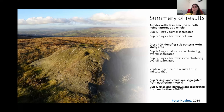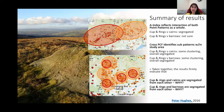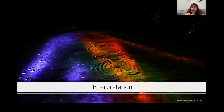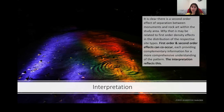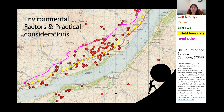Summarising and interpreting now: it is very important to note that the A index reflects the interaction of both point patterns as a whole. So they indicate cup and rings and cairns are segregated, and that cup and rings and barrows might be segregated. The local cross-PCF is used to identify sub-patterns within the study area — it did identify some clustering at less than a kilometre, which could be further investigated by a surface survey, but overall the patterns were also segregated. Essentially it is clear that there is a second-order effect of separation between monuments and rock art within the study area, and why that distribution exists may be related to first-order density effects on the respective site types.